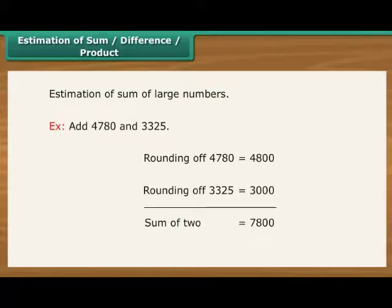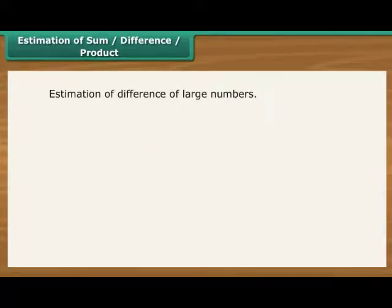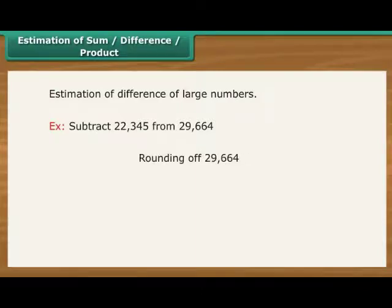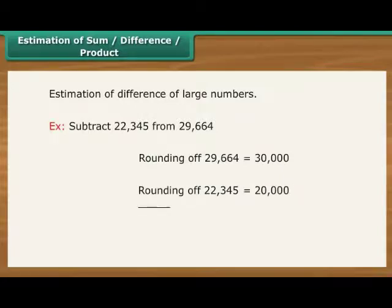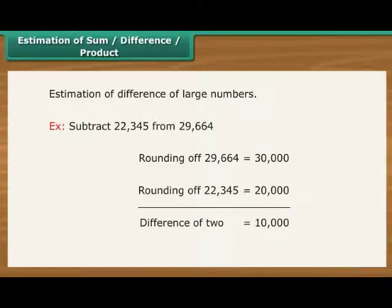Estimation to nearest number can help in the estimation of the difference of two large numbers. For example, subtract 22,345 from 29,664. Rounding of 29,664 would make it 30,000. Rounding of 22,345 would make it 20,000. Difference of 2 is equal to 10,000.